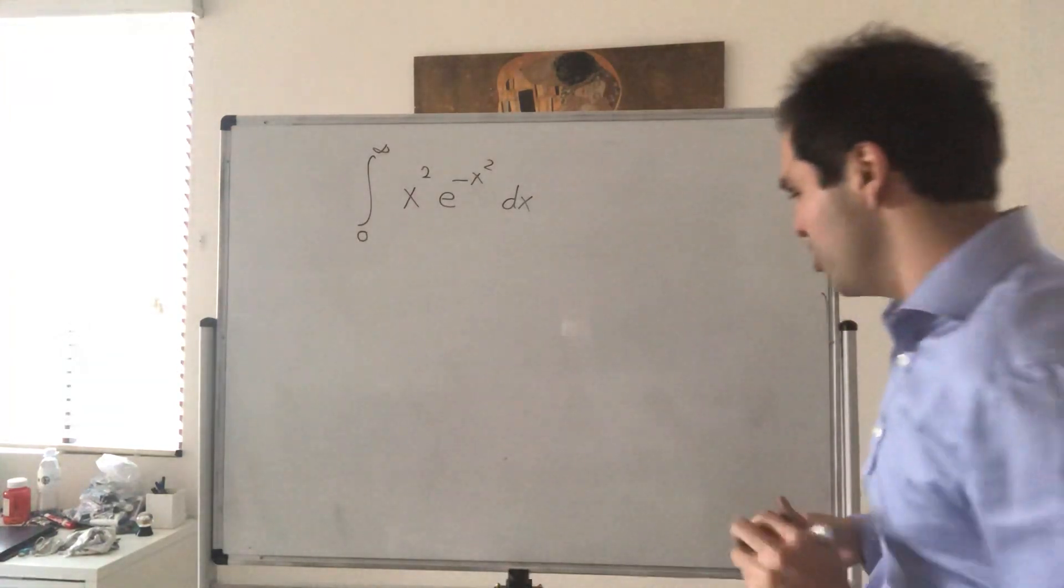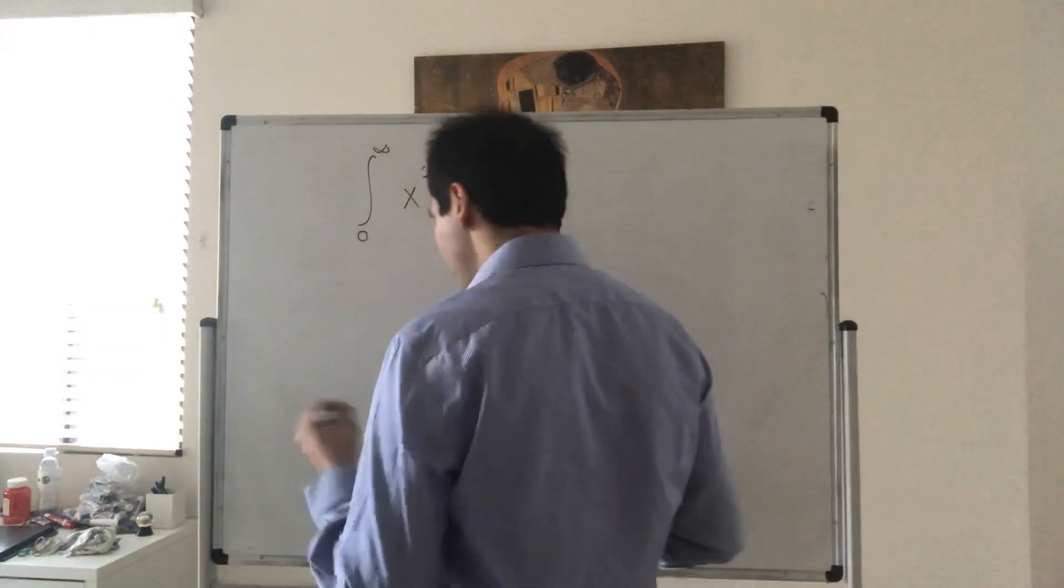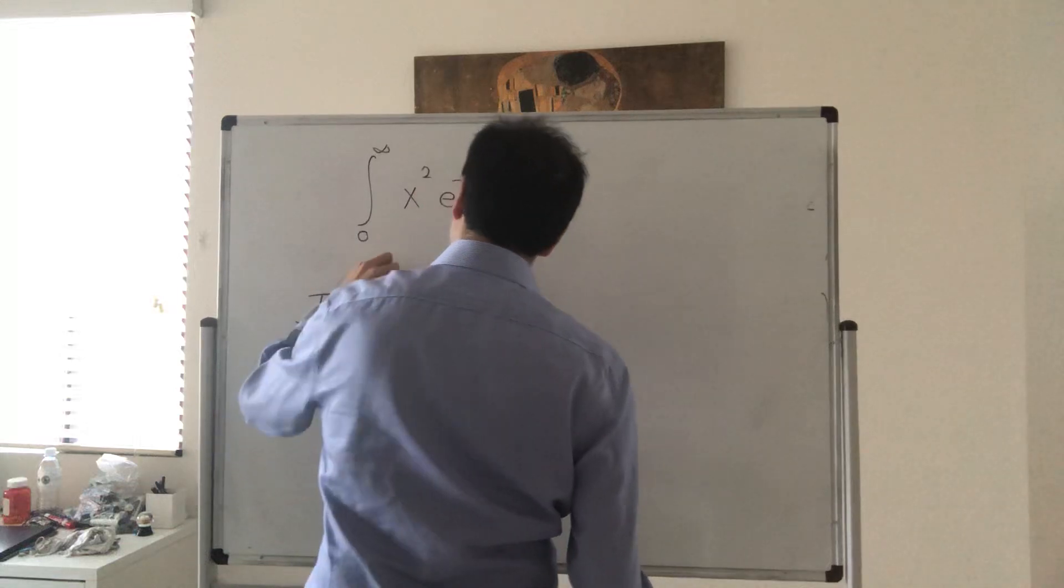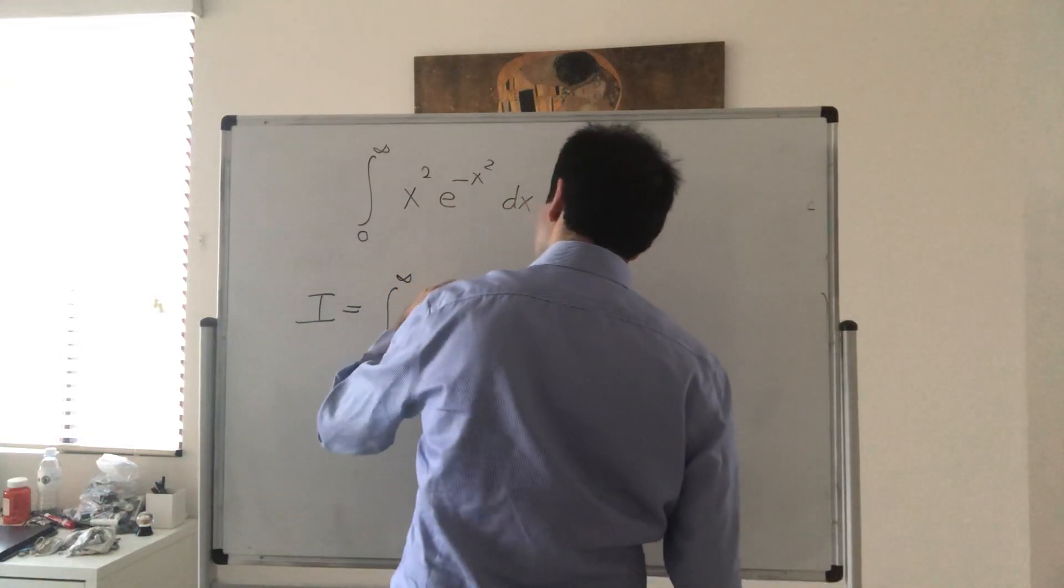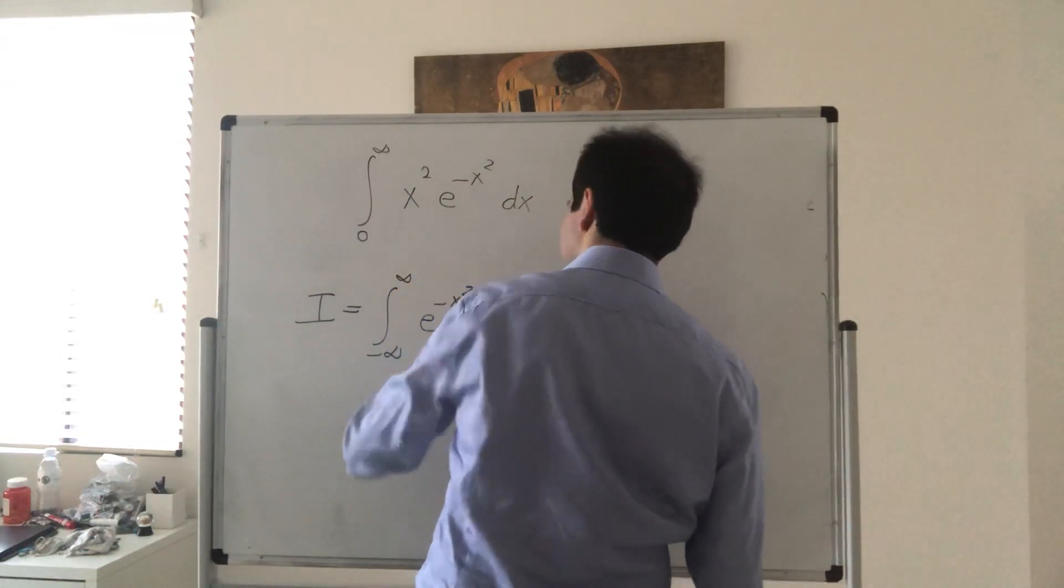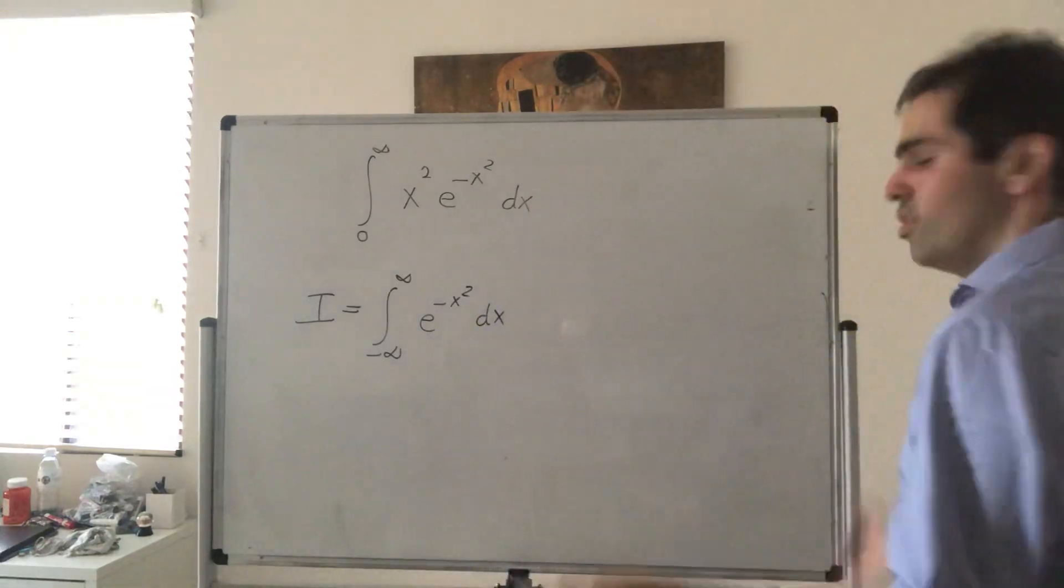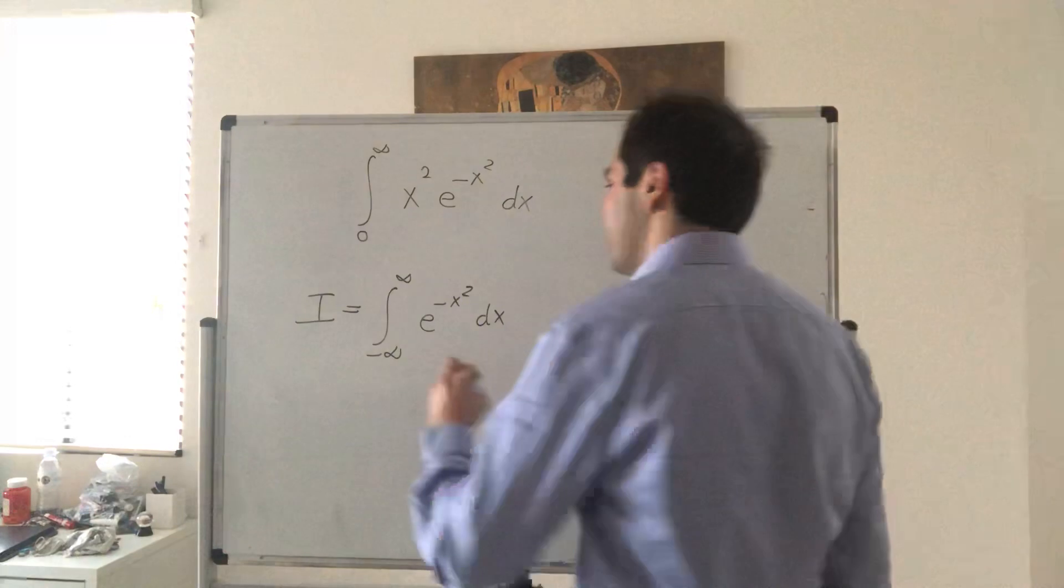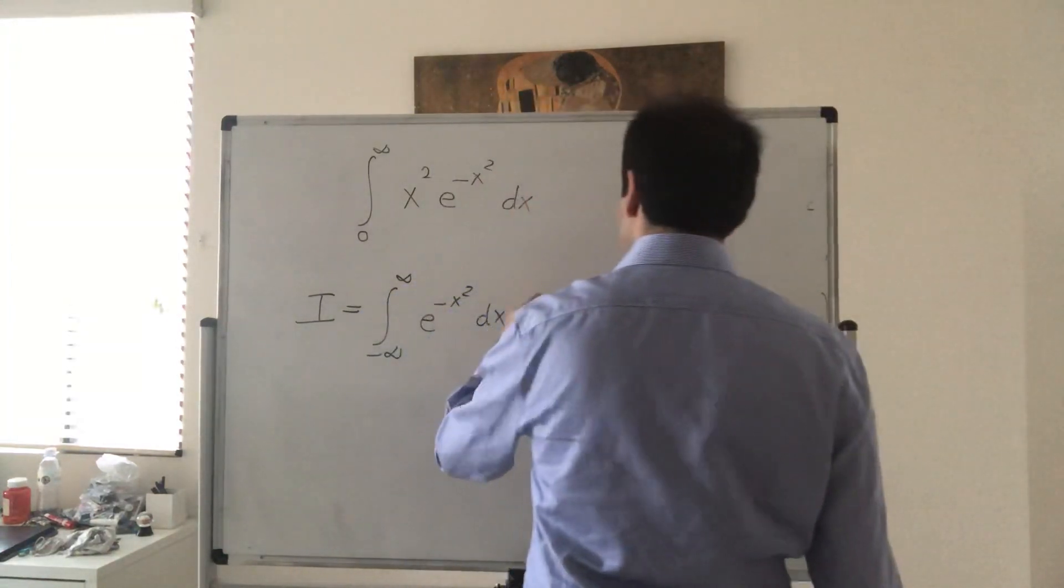Because start with the Gaussian integral, which is the integral from minus infinity to infinity of e to the minus x squared dx. We'll take it as a given—there are like 12 other videos I made about this—that this is square root of pi.